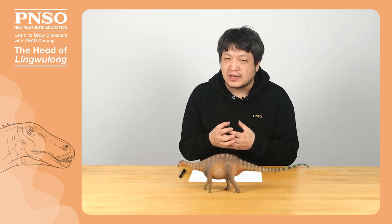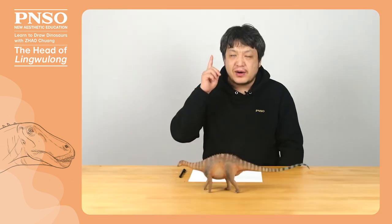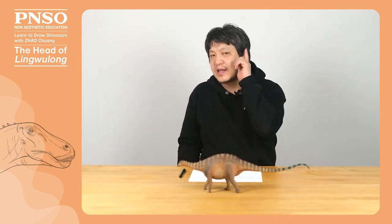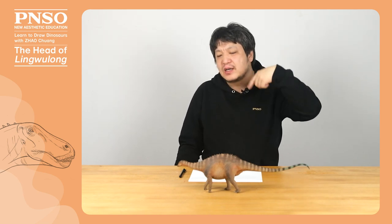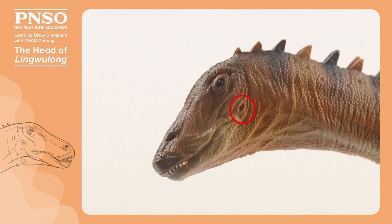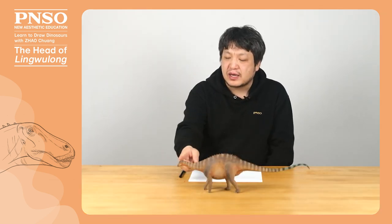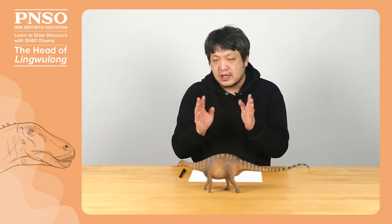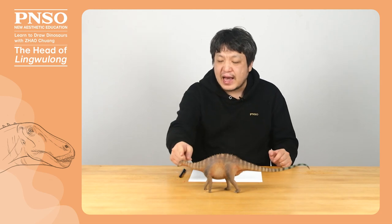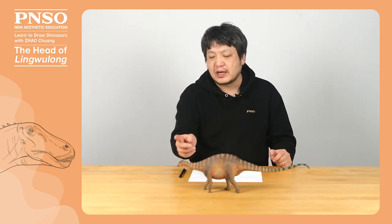For example, its eye was at the top of its head, and there was a temporal fenestra behind the eye. Generally, the temporal fenestra of dinosaurs behind their eyes was a square, but that of sauropods tilted downward, extending to the lower part of their eyes. Besides, when drawing the mouth of Lingwilong, pay attention to the proportion of its mouth to its eyes. We must notice the contrast relationship at all times and observe the exact position of its mouth in front of its eyes.